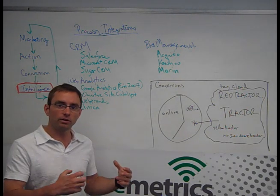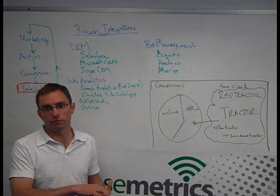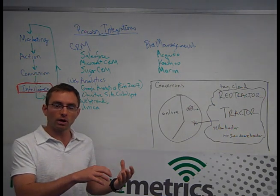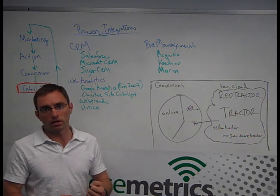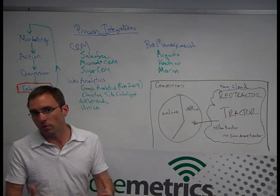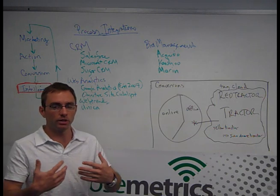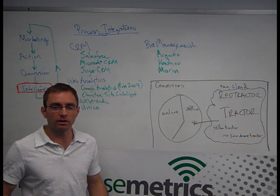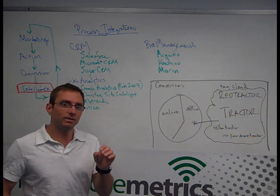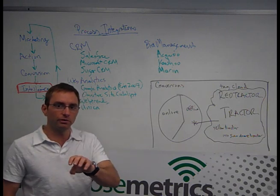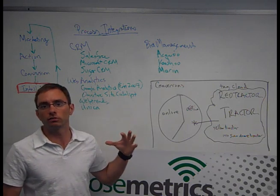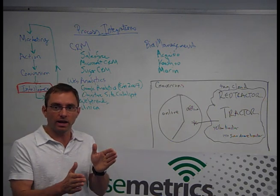Now, with Mongoose Metrics, you're able to layer in offline conversion information. Before, when somebody would call your company and want to buy something or need more information or get added into your customer relationship management system, you didn't have the ability to tie the call information back to all that rich marketing source information.